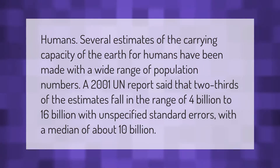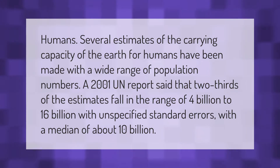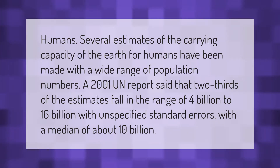Several estimates of the carrying capacity of the earth for humans have been made with a wide range of population numbers. A 2001 UN report said that two-thirds of the estimates fall in the range of 4 billion to 16 billion, with unspecified standard errors, with a median of about 10 billion.